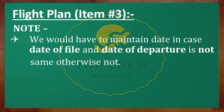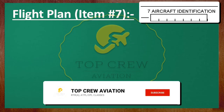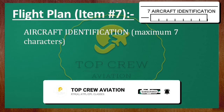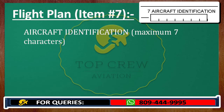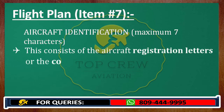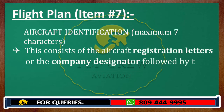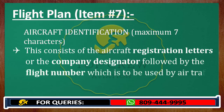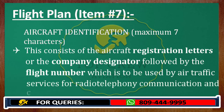Now, as we know about item number 3, let's talk about item number 7, which is next — Aircraft Identification. As we can see in item number 7, which is Aircraft Identification, maximum 7 characters can be inserted. We do not have any option to write something that is more than 7 characters. This item consists of Aircraft Registration Letters or the Company Designator, followed by the Flight Number, which is used by Air Traffic Services for Radio Telephonic Communication and Coordination.